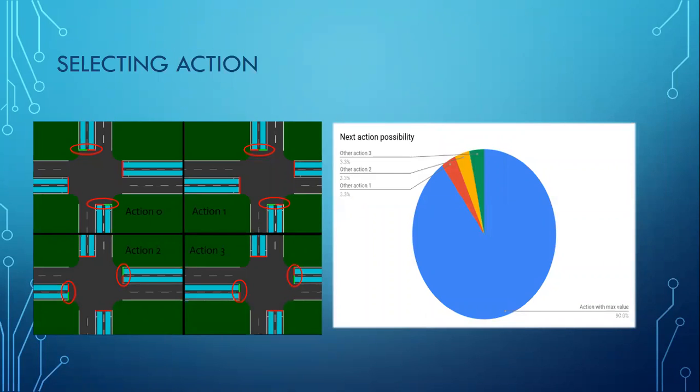We have four possible actions based on our intersection as you can see on this picture. In 90% of samples, we choose the action that has the maximum value in Q-table. In 10%, we randomly choose action. That way, we give them a chance to be chosen even though they don't have the maximum value.